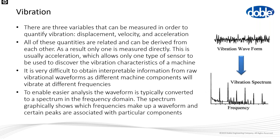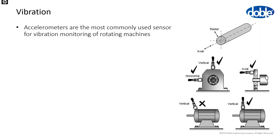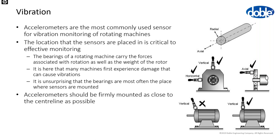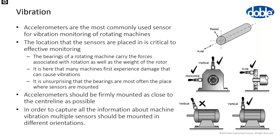Accelerometers are the most commonly used sensor, and sensor location is critical for effective vibration monitoring. Bearings carry forces from rotation as well as the rotor's weight, and this is where most machines experience damage causing vibration. Vibration accelerometers are therefore typically placed on bearings, mounted firmly as close to the centreline as possible. To capture all information about a rotating machine, multiple vibration sensors should be mounted in different orientations, as illustrated in the diagram.